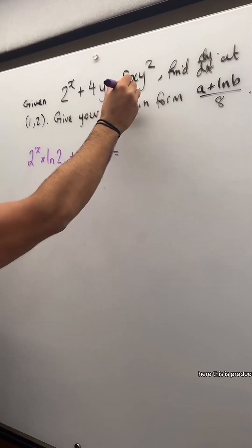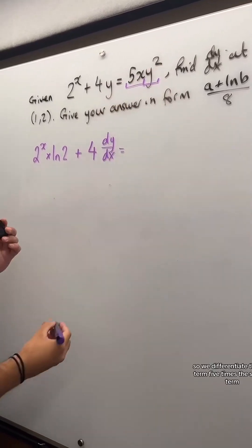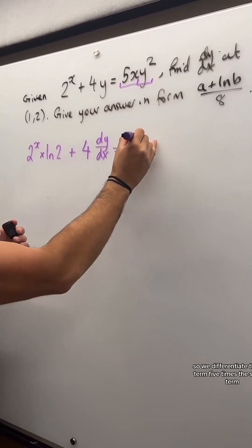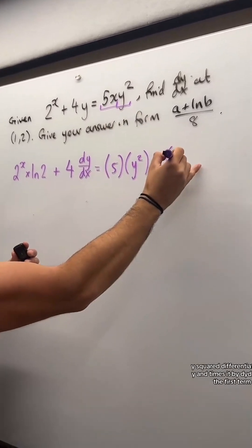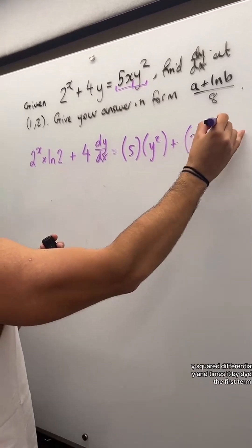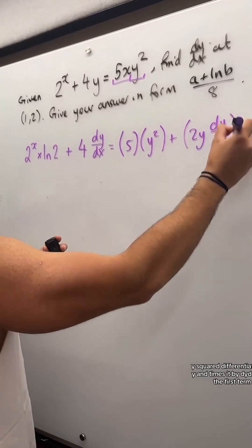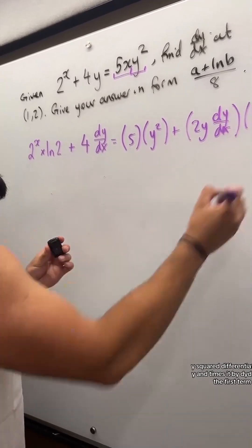Here, this is product rule. So we differentiate the first term, 5, times the second term, plus differentiate the second term, y squared, differentiates to 2y, and times it by dy/dx, times the first term. Now,